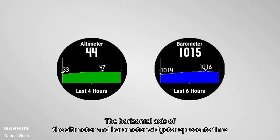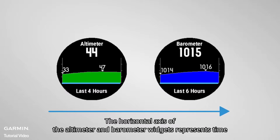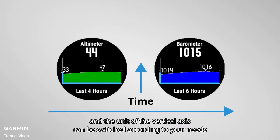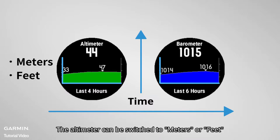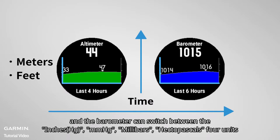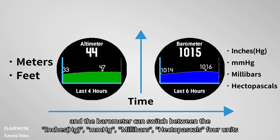The horizontal axis of the altimeter and barometer widgets represents time, and the unit of the vertical axis can be switched according to your needs. The altimeter can be switched to meters or feet, and the barometer can switch between inch, mmHg, millibars, and hectopascal — 4 units.